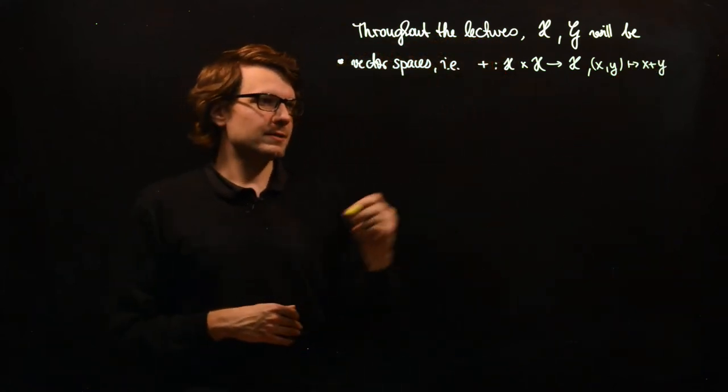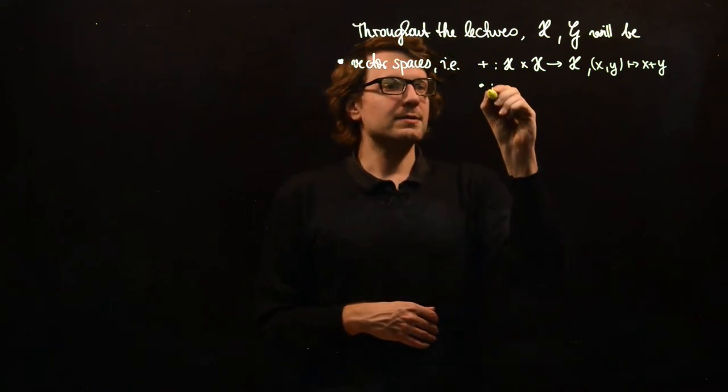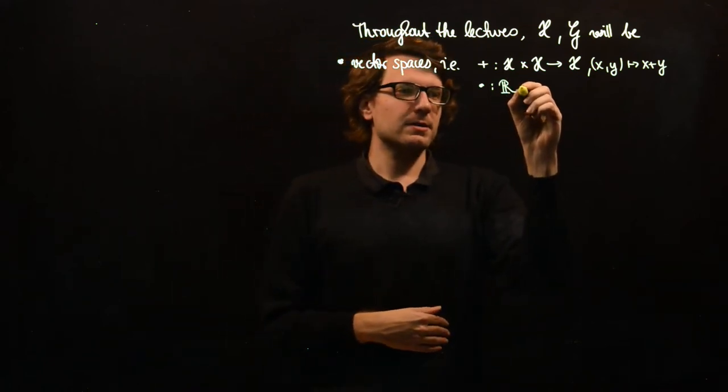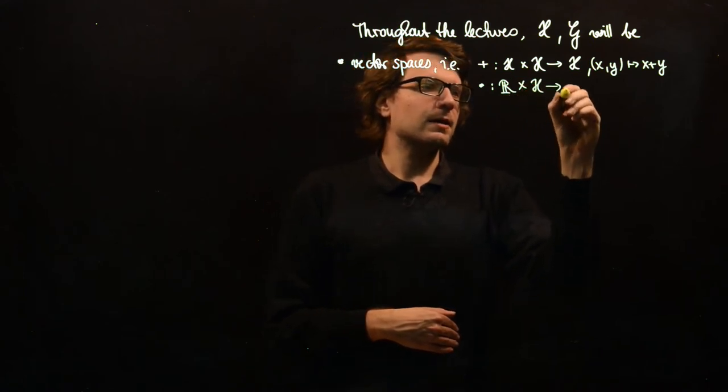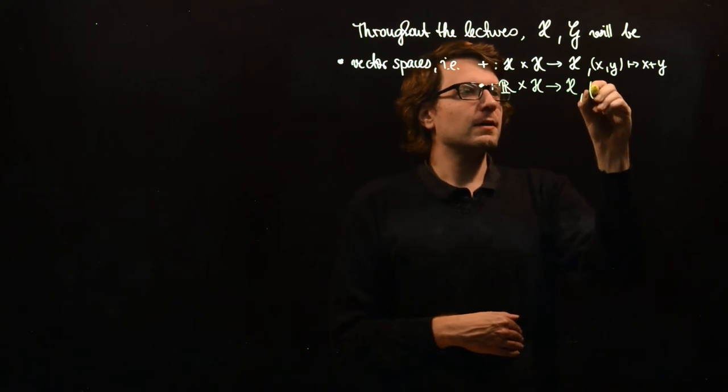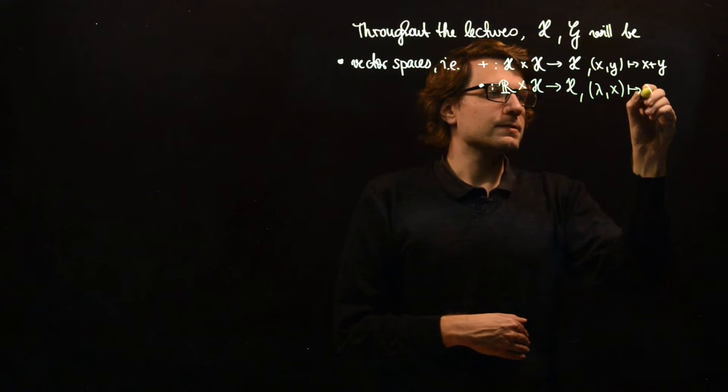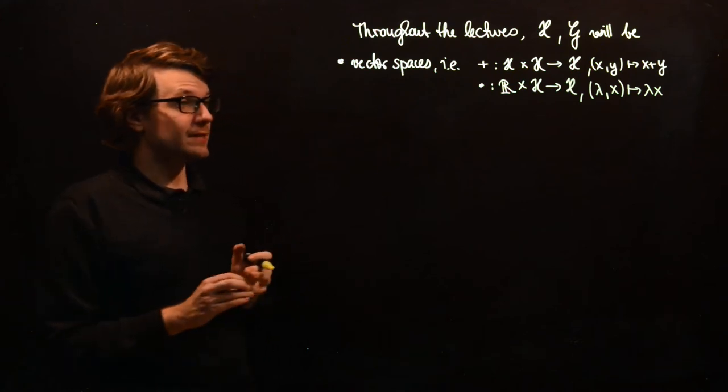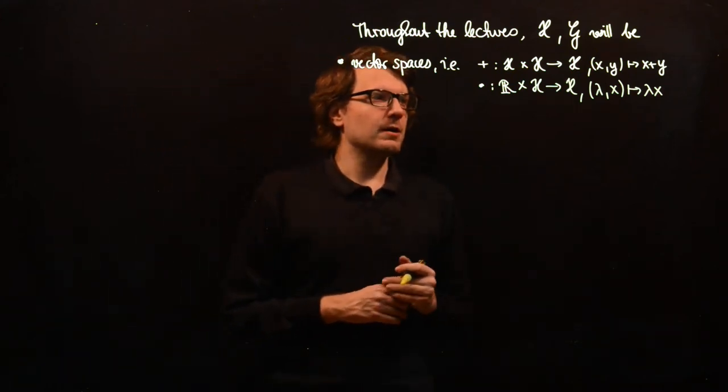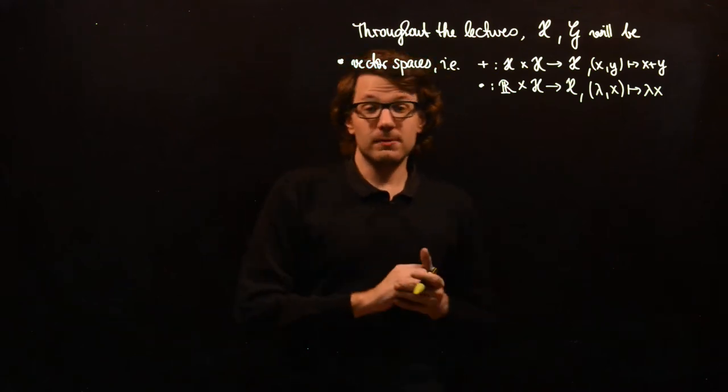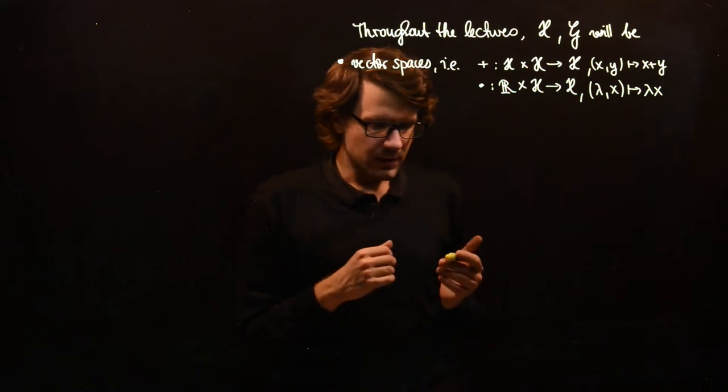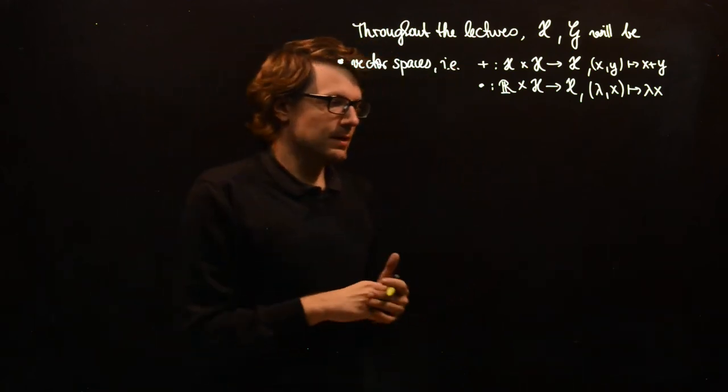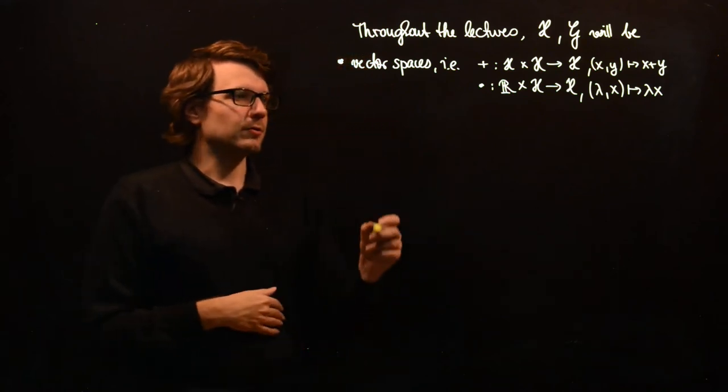We write this as an infix operation and we have a scalar multiplication. So we take a real number and a vector and we will get back a vector, and we write this usually as lambda X without any dot. So we have these two operations which should give meaningful results, and usually we will assume that they have the usual laws which you would expect for vectors, like plus is commutative, associative and so on. I will not go into detail here.